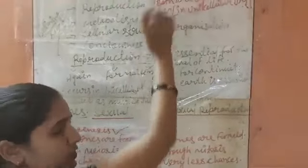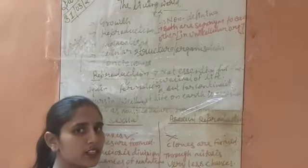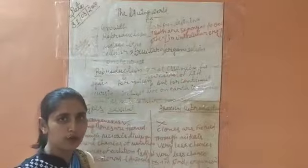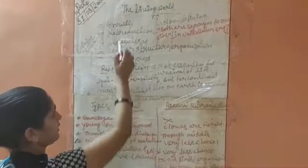As we discussed in the previous class, growth and reproduction both are non-defining features. Non-defining features are the features or characteristics that have exceptions. Both growth and reproduction are not very essential for the survival of an individual living organism.